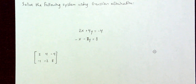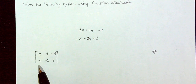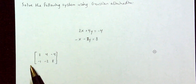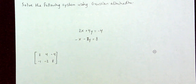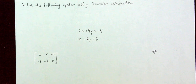So I need to eventually get a 1 here and a 0 here, and a 1 here and a 0 here. As a quick recap: we can switch rows, multiply a row by a non-zero constant, or add a non-zero constant multiple of one row to another row.